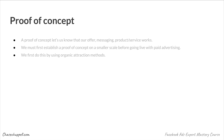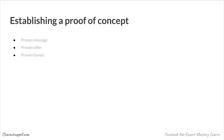If we end up proving out the concept with organic attraction methods, we're going to be able to identify what is the best messaging we can start using. We're really able to find out a lot of good things prior to going live with the ads, so that way we can really have something set in stone for when we do. We must first establish a proof of concept on a smaller scale before going live with paid advertising. We first do this by using organic attraction methods — establishing a proven message, a proven offer, and a proven funnel.